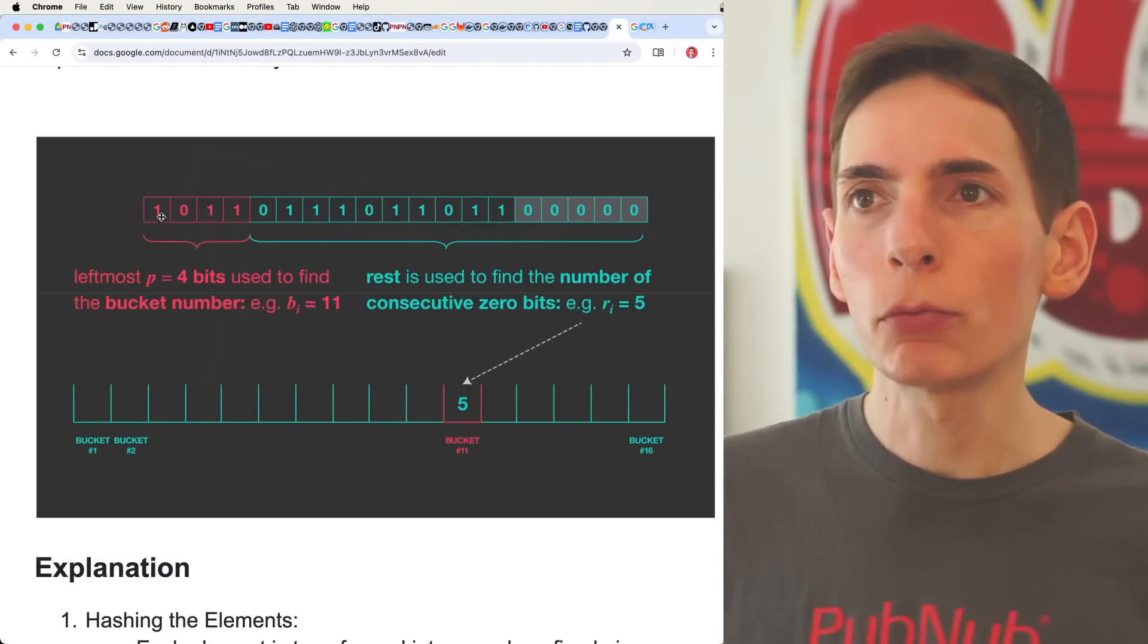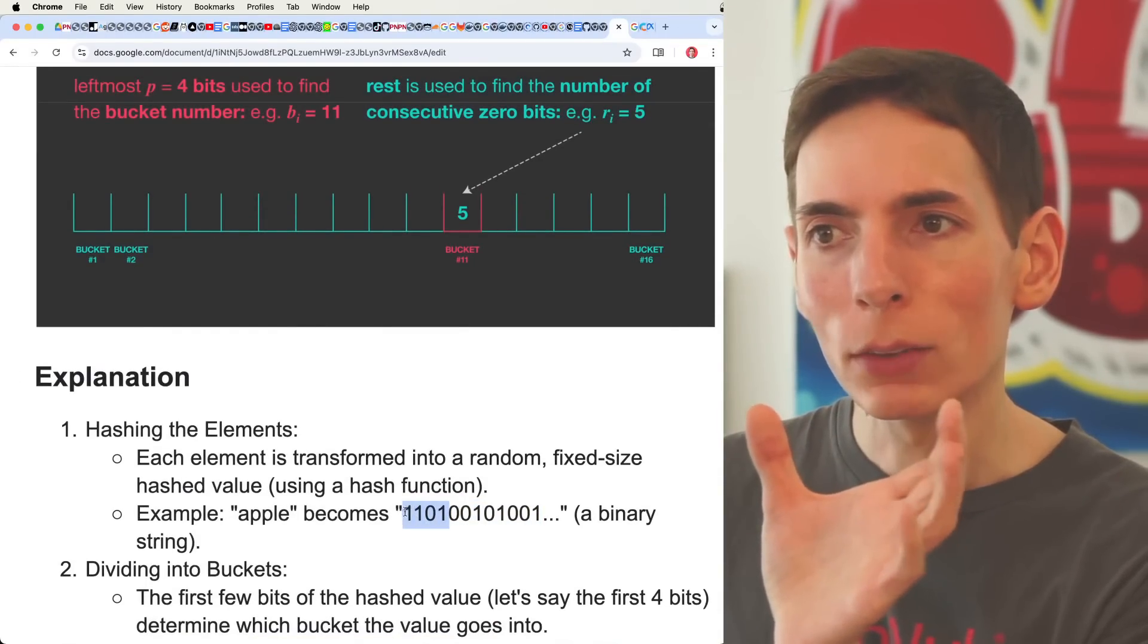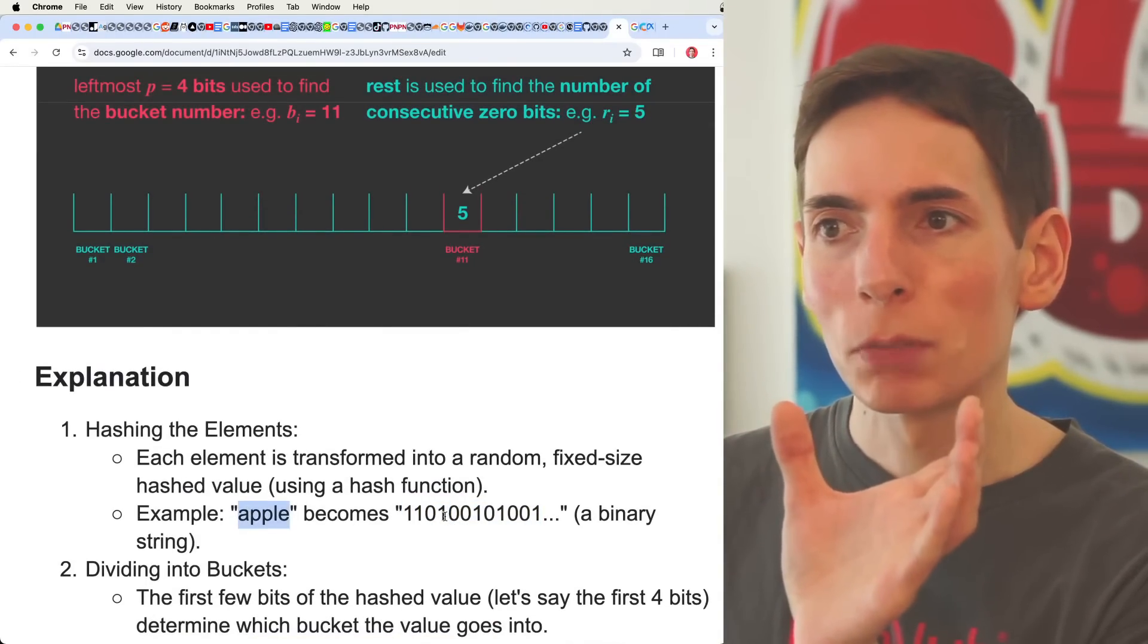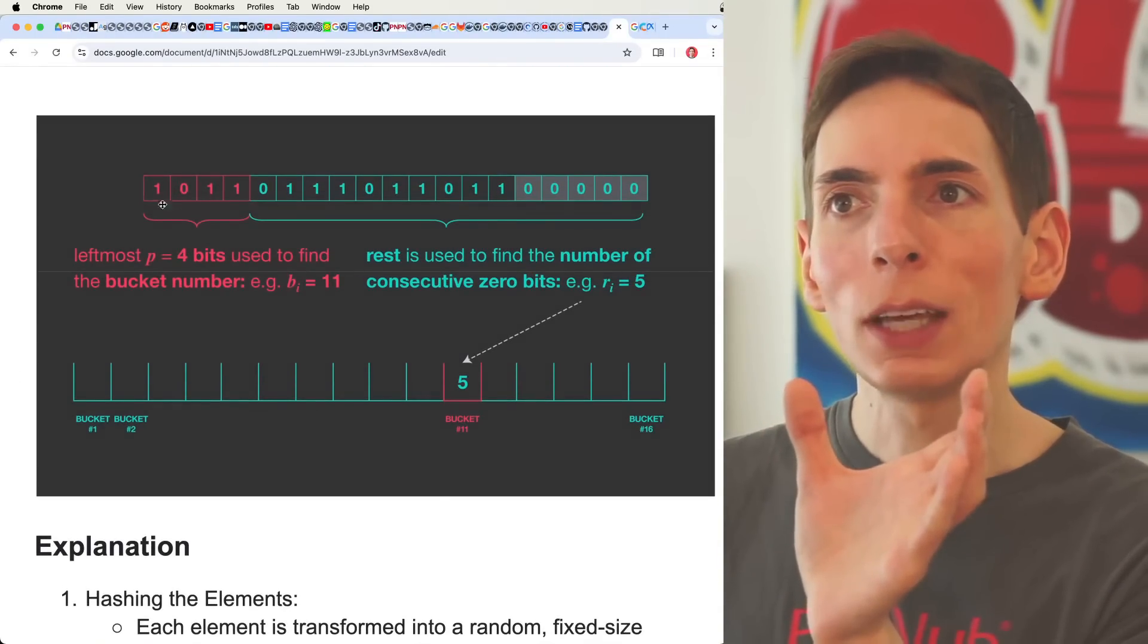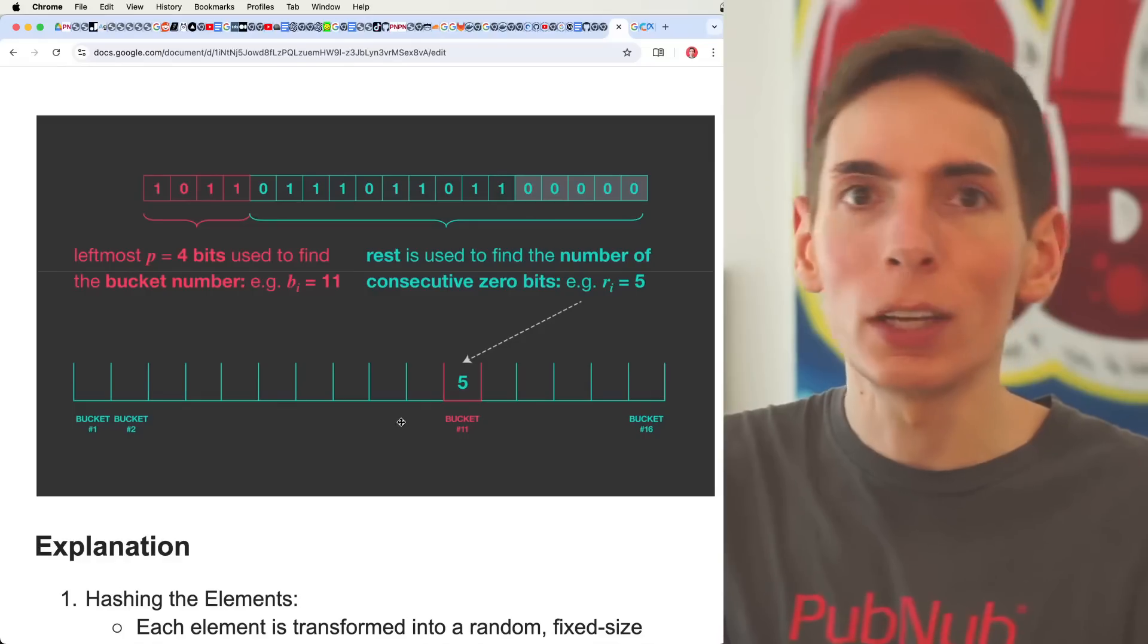So let's just start at 4. Say we have 4 bits. You take of that binary string, we take the first 4 bits from the apple hash. And we say that's the element that corresponds to the bucket or the position in the array of integers.